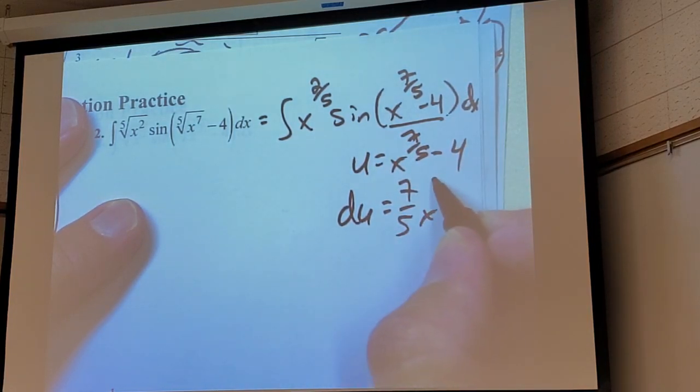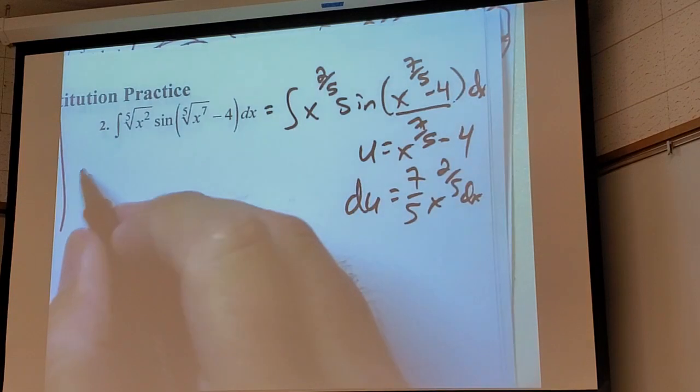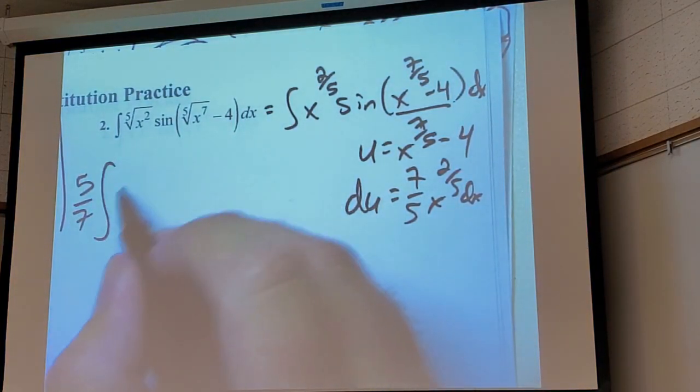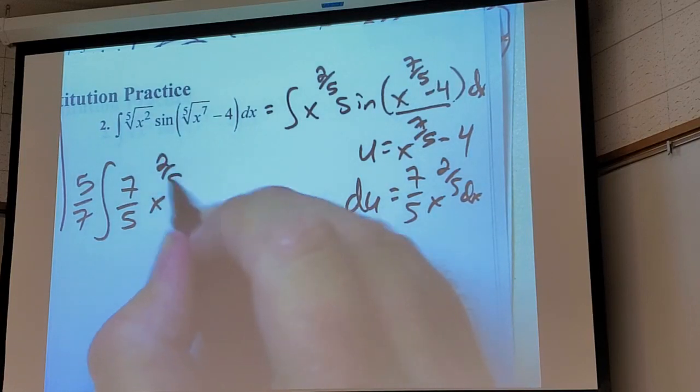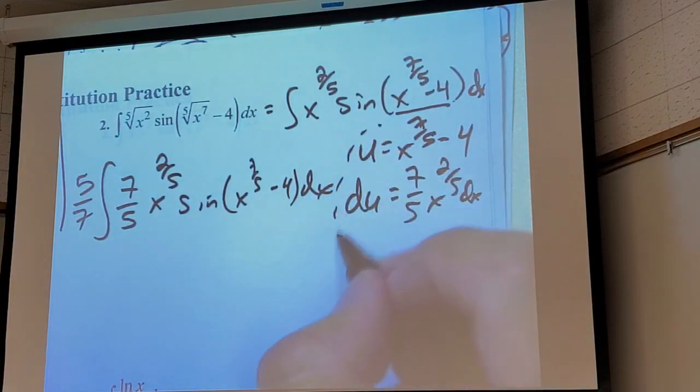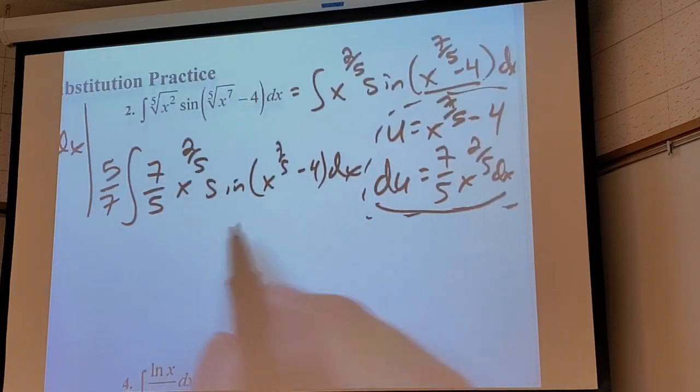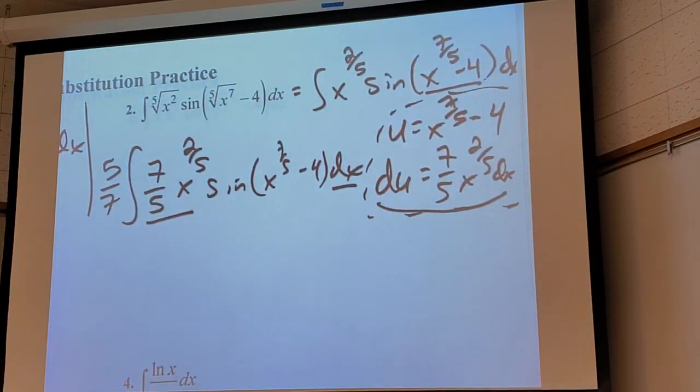So if I let u equal x to the 7/5 minus 4, what's du? 7/5 x to the 2/5. So I have x to the 2/5, which is the important part, right? I'm missing the coefficient, the constant coefficient. Who gives a shit? What can I put on the outside? 5/7. Good. The reciprocal. So I can rewrite this as 5/7 integral 7/5 x to the 2/5 sine of x to the 7/5 minus 4. Here's my side work. Can I see du? Yes.